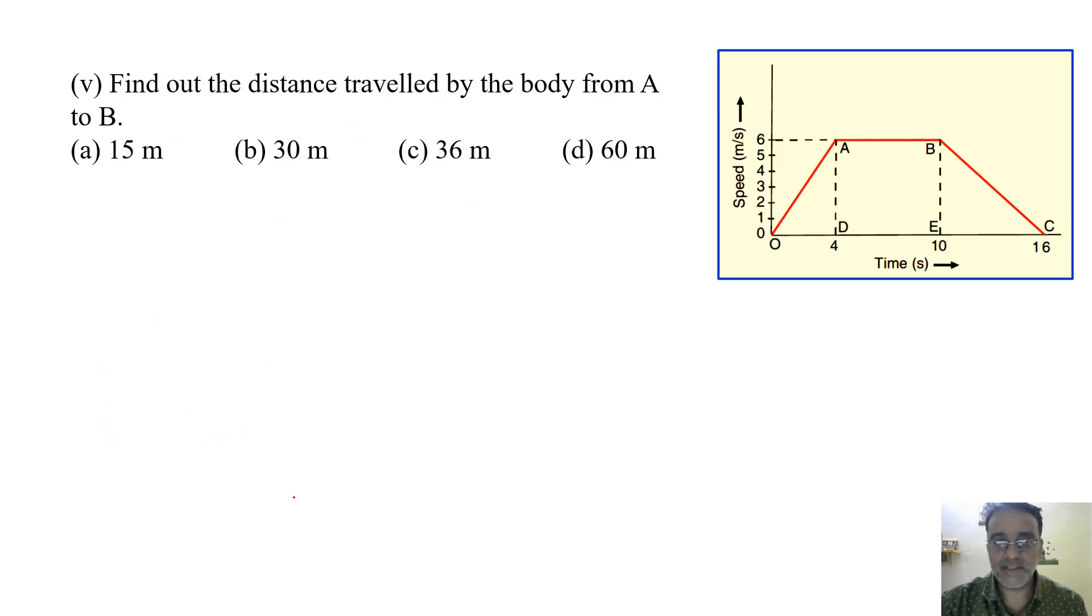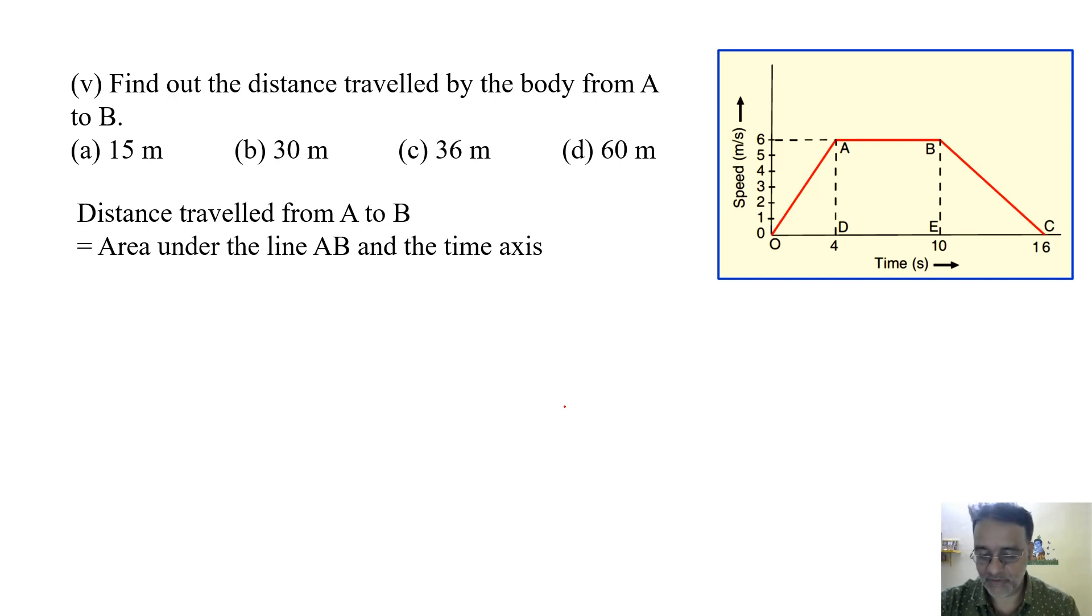Now the last question. Find out the distance travelled by the body from A to B. A to B, the speed is constant. So yaha pe jo formula jo hoga, wo hoga area under the line AB and the time axis. That will be the distance travelled by the body from A to B. And this will be the area of rectangle.